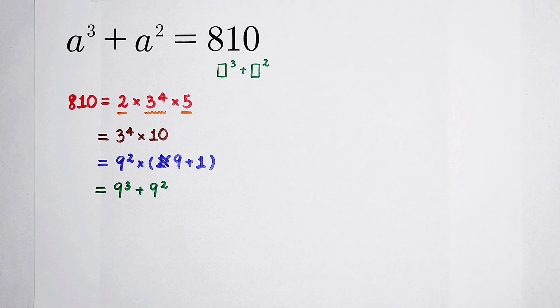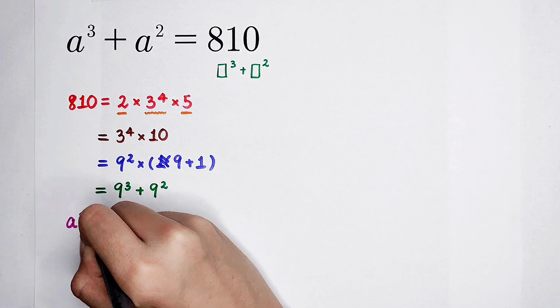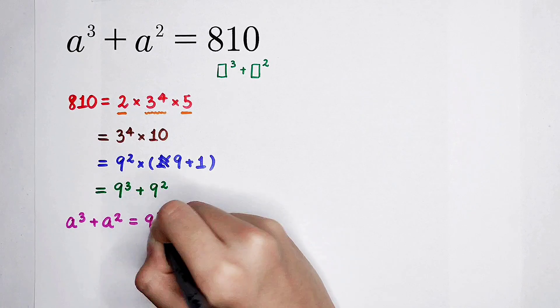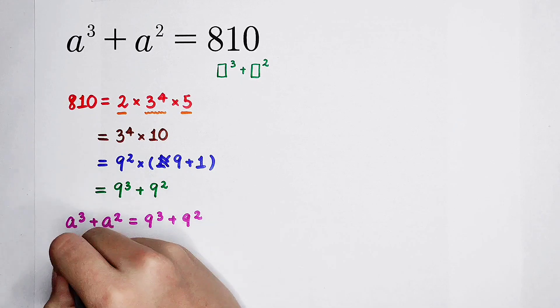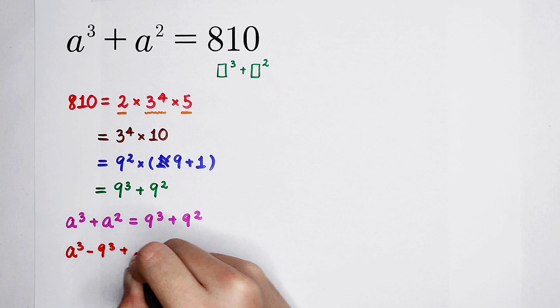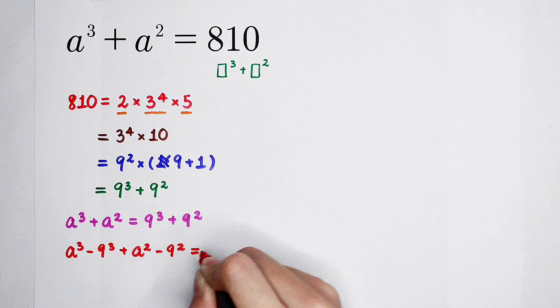a cubed plus a squared is equal to 9 to the power of 3 and then plus 9 squared. So a to the power of 3 minus 9 to the power of 3 plus a to the power of 2 minus 9 squared is equal to 0.